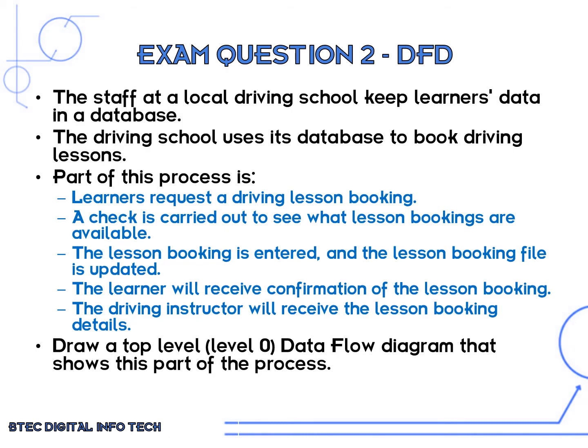Let's take a look at another exam question. Staff at a local driving school keep learners' data in a database. The driving school uses its database to book driving lessons. Part of this process is: learners request a driving lesson booking, a check is carried out to see what lesson bookings are available, the lesson booking is entered and the lesson booking file is updated, the learner receives confirmation of the lesson booking, and the driving instructor receives the lesson booking details. This whole system could be drawn in a detailed data flow diagram with all the processes, but for a level zero diagram we don't need to show any processes.